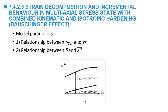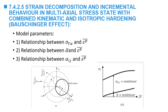What is required for this model are two relationships: sigma yield alpha versus the equivalent plastic strain, and also the relationship between alpha and the equivalent plastic strain. Because we are doing a general 3D loading case, we also need the relationship between the center of the yield surface, or the components of the back stress tensor, and the equivalent plastic strain.